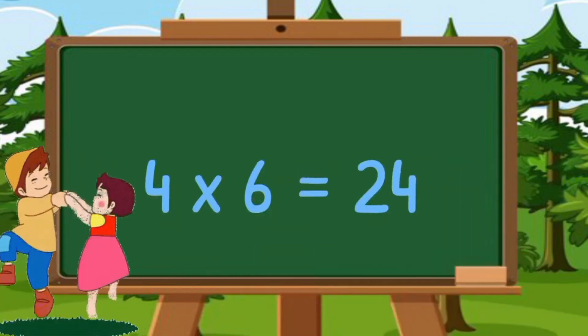Six ones are forty-five. Six sevens are forty-five. Six eights are forty-eight. Six nines are fifty-four. Six tens are sixty.